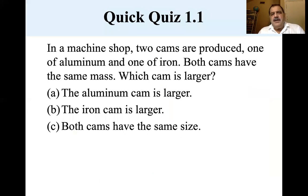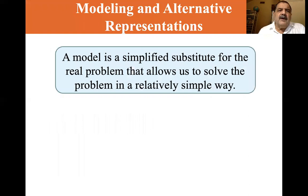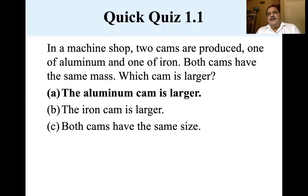Here's a quick quiz. In a machine shop, two cams are produced, one of aluminum and one of iron. Both cams have the same mass. Which cam is larger? If you look at any density table, you'll see that aluminum is much less dense than iron. So the aluminum cam has to be larger. And that ends our introductory lecture.